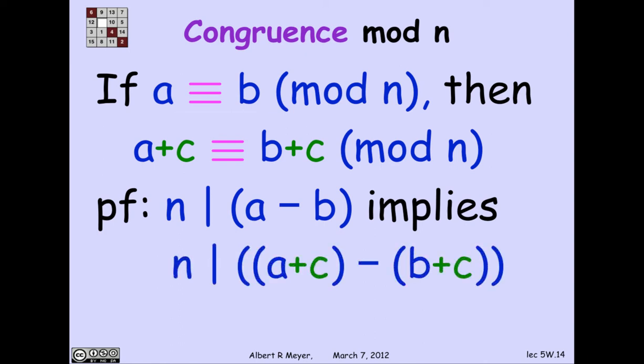because the a congruent to b mod n says that n divides a minus b. And if n divides a minus b, obviously n divides a plus c minus b plus c, because a plus c minus b plus c is equal to a minus b. That one is deceptively trivial.